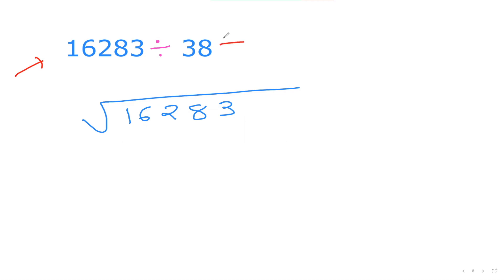The first step is to think: is 38 closer to 30 or 40? We know 38 is closer to 40, so I'll go with 40 — writing only 4 here. The difference between 38 and 40 is 2, so I'll write down +2. This +2 is going to be very critical in the process.